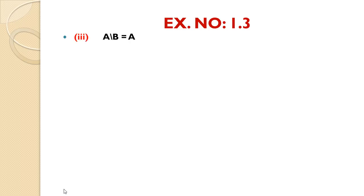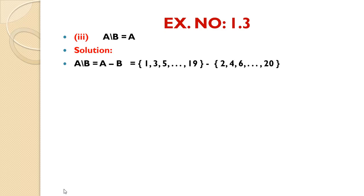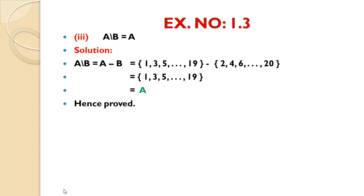Third part — A - B = A: Solution: A - B means we write set A elements, difference sign, then set B elements. A - B is the set of all elements of set A which are not elements of set B. The result is 1, 3, 5, ..., 19, which is exactly set A. Hence proved.